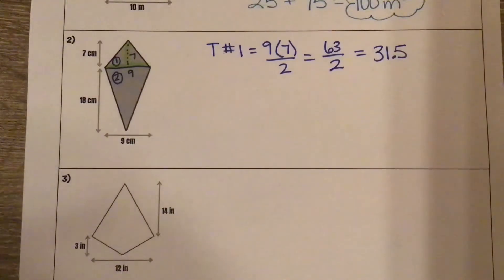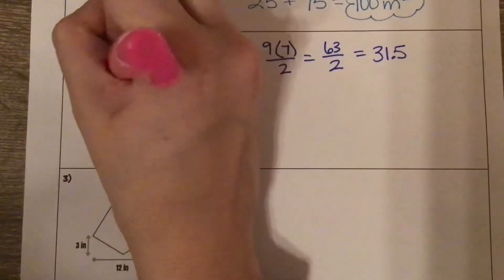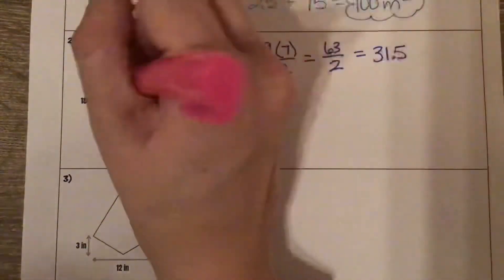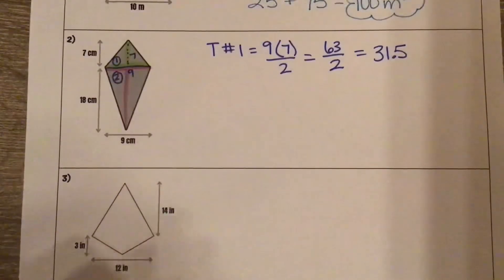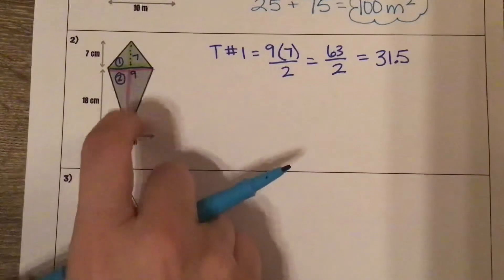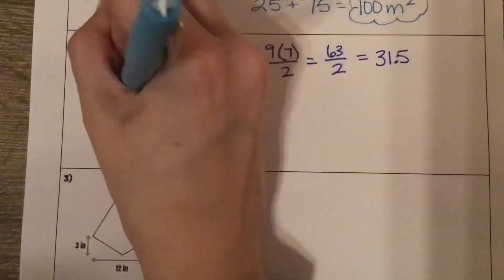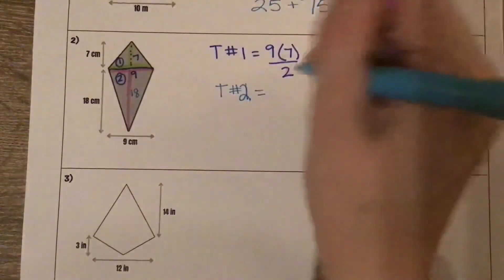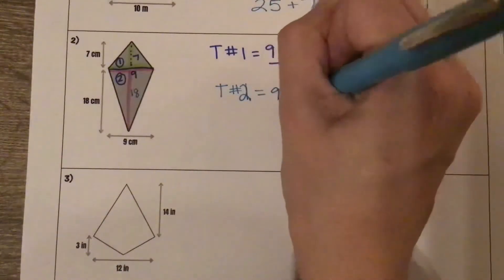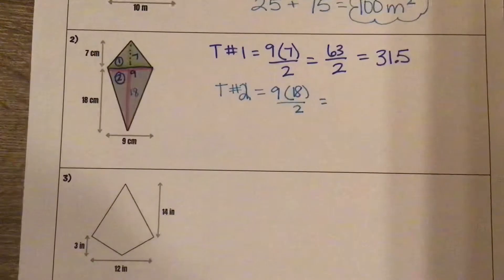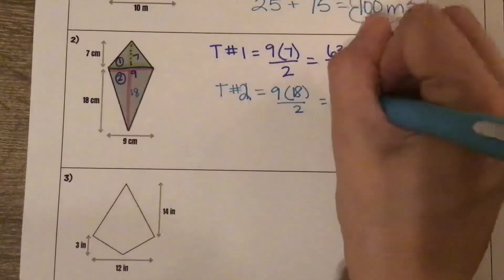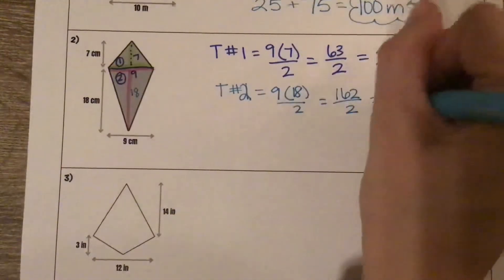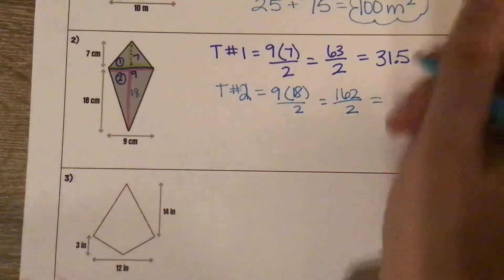Now let's do the same thing for triangle number 2. We have a base length going across that's the same and a perpendicular height. Our base across is still 9, and that perpendicular height matches this 18. Triangle number 2 is a base of 9 times our height of 18 divided by 2 — 9 times 18 is 162 divided by 2 gives us 81.